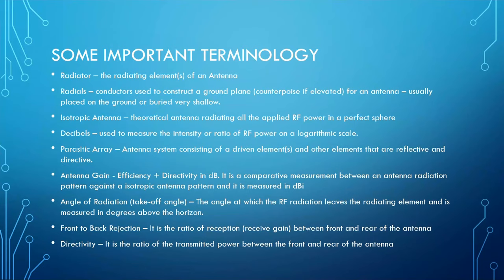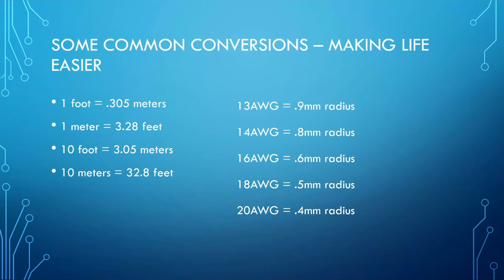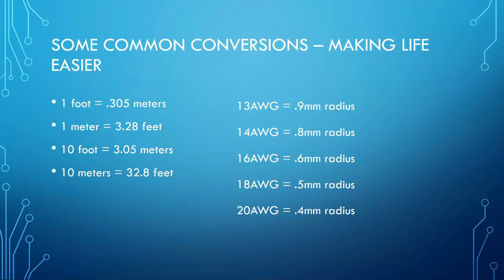The software uses meters, not feet. One foot equals 0.305 meters; one meter equals 3.28 feet; 10 feet equals 3.05 meters; 10 meters equals 32.8 feet. In the US we use American wire gauge, while the rest of the world uses radius in millimeters. 13 gauge wire equals 0.99 mm radius; 14 gauge equals 0.8 mm. The smaller the wire gauge number, the larger the radius.